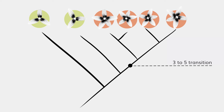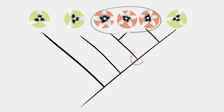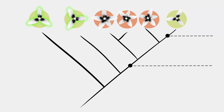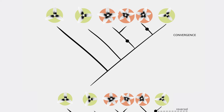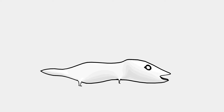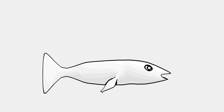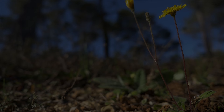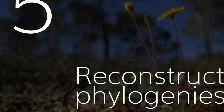But if one of these species instead had three petals, things become more complicated. There are two possibilities: either we keep the same scenario but with a transition back to three petals in that species — this is what we call a reversal — or the five-petal trait evolved twice independently in this group — this is what we call convergence. These two processes, reversal and convergence, are very interesting from an evolutionary point of view. For instance, the loss of limbs in snakes is a reversal compared to their tetrapod ancestors, which themselves — like you and I — are derived from ancestors that originally lacked limbs and looked more like what we would call fish.